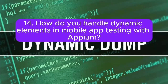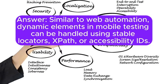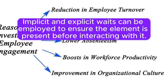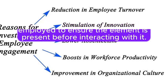14. How do you handle dynamic elements in mobile app testing with Appium? Similar to web automation, dynamic elements in mobile testing can be handled using stable locators, XPath, or accessibility IDs. Implicit and explicit waits can be employed to ensure the element is present before interacting with it.